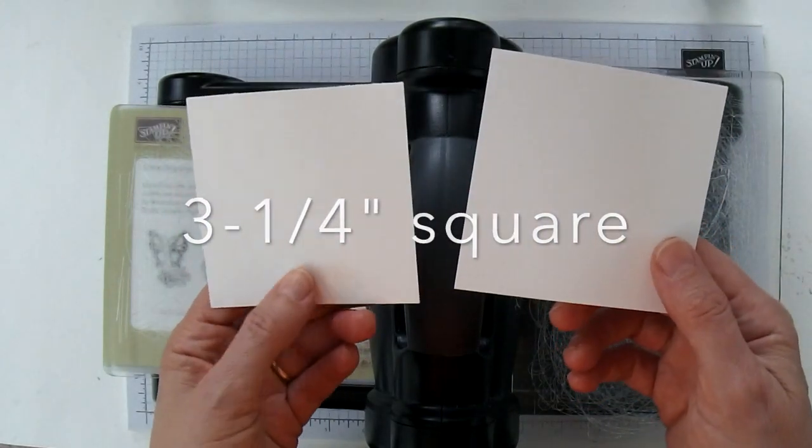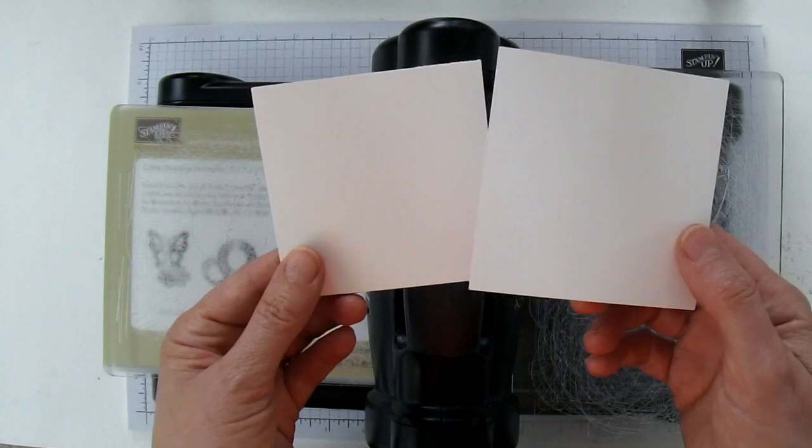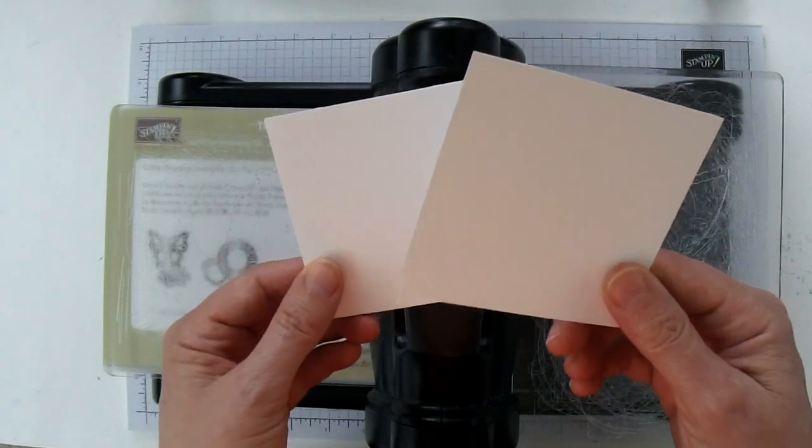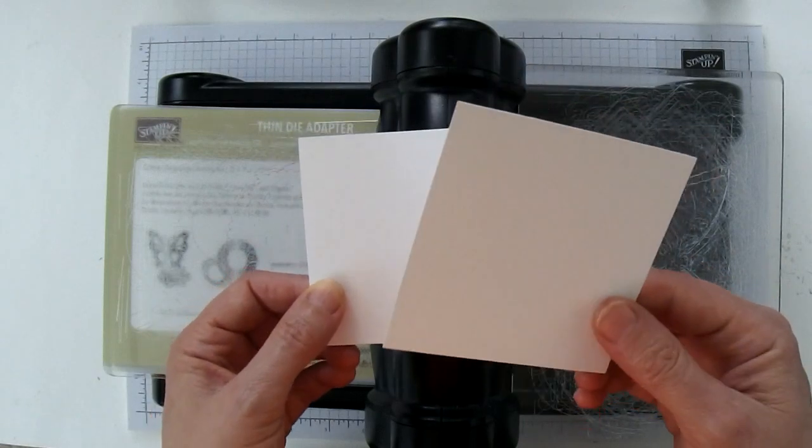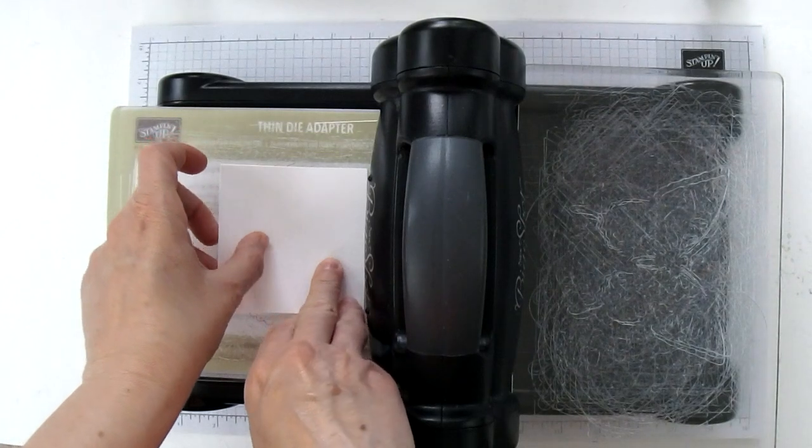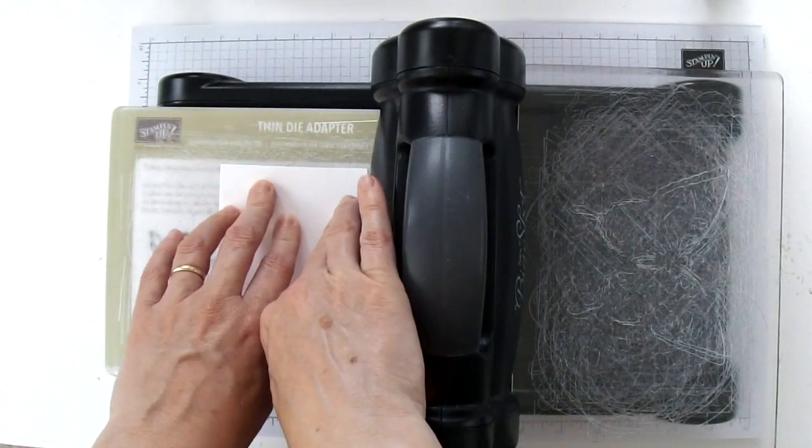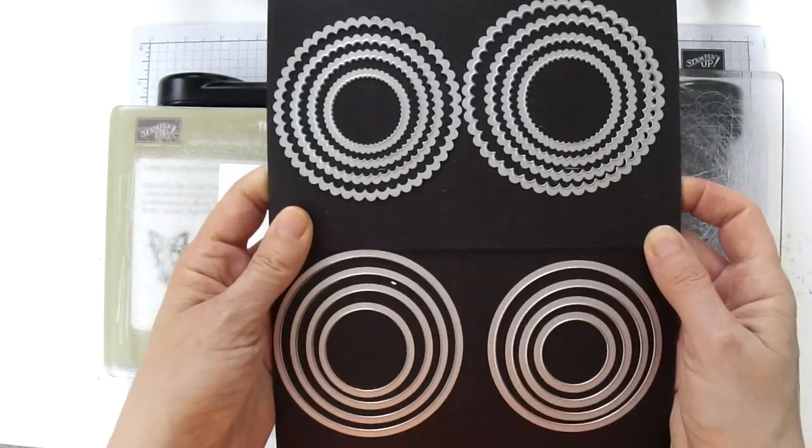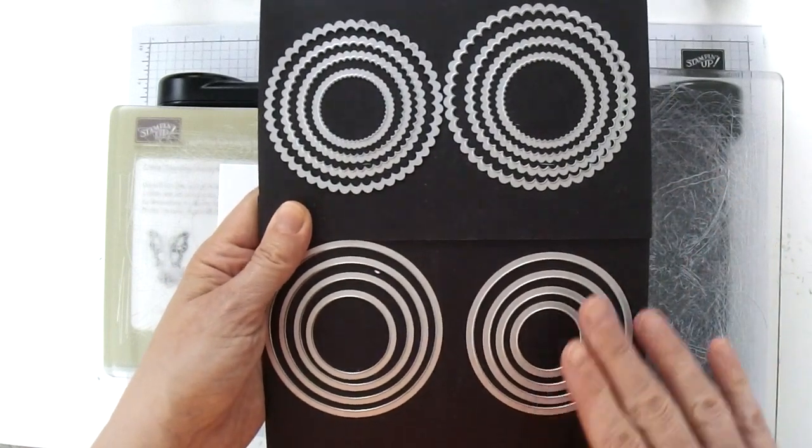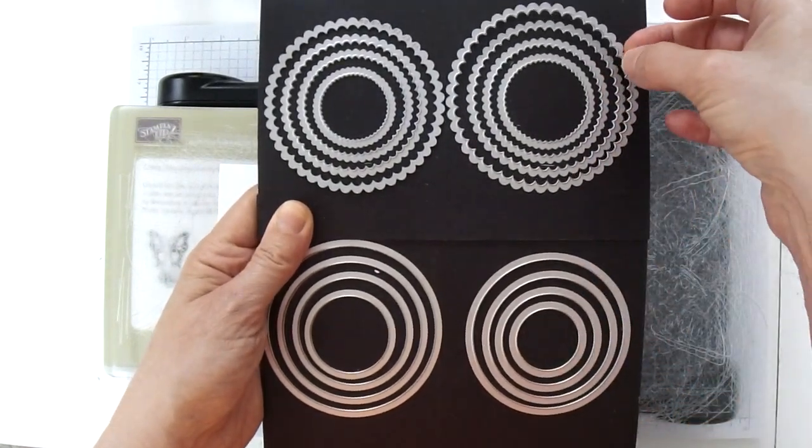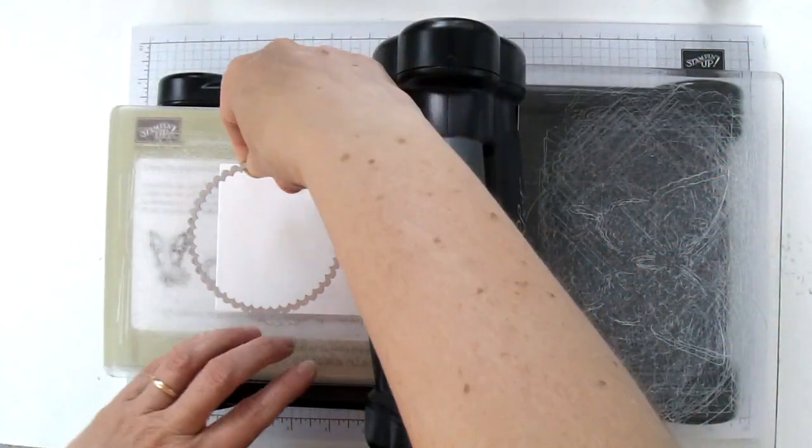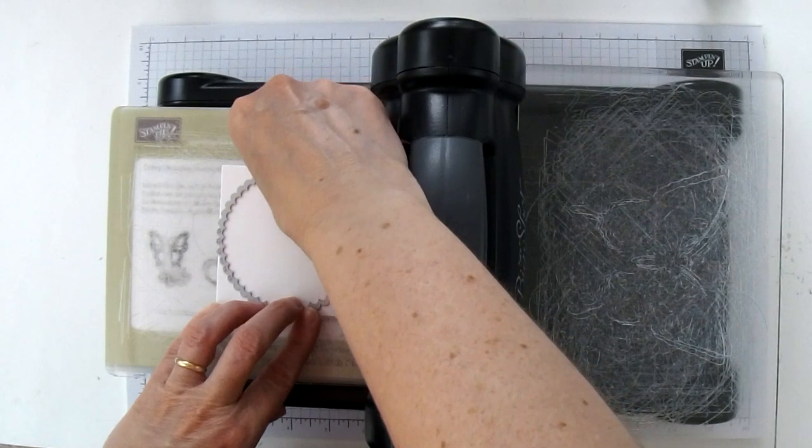If you are using our regular weight cardstock to do this dress, you will need to cut these scalloped circles individually. Regular Whisper White is a little thinner, so we can cut two of the scalloped circles at one time. So I've just layered them on top of each other. Then you're going to need the layering circles framelits. They come in both smooth circles and scalloped circles. You're going to need the largest scalloped circle.